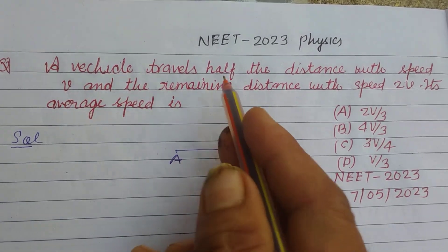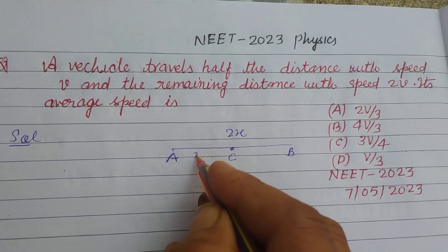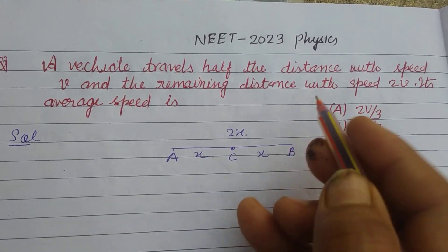The question says a vehicle travels half the distance. So let point C be the midpoint. So this is x and this is also x.